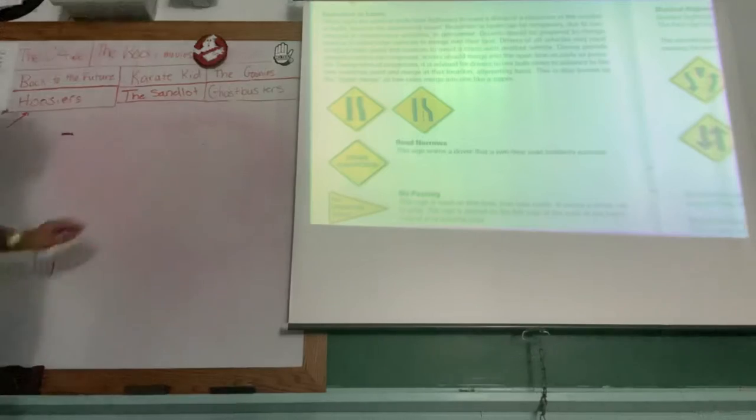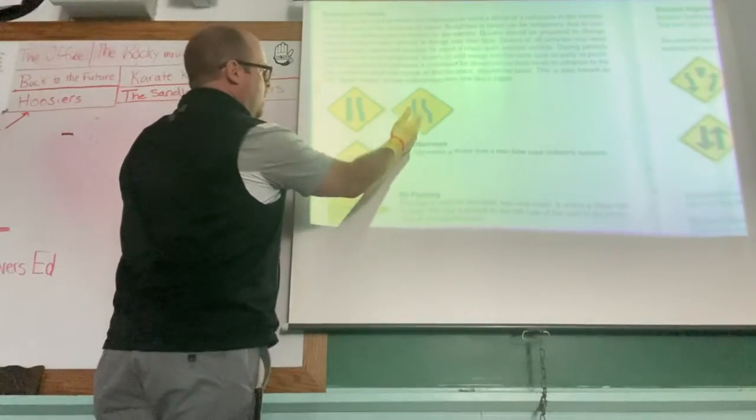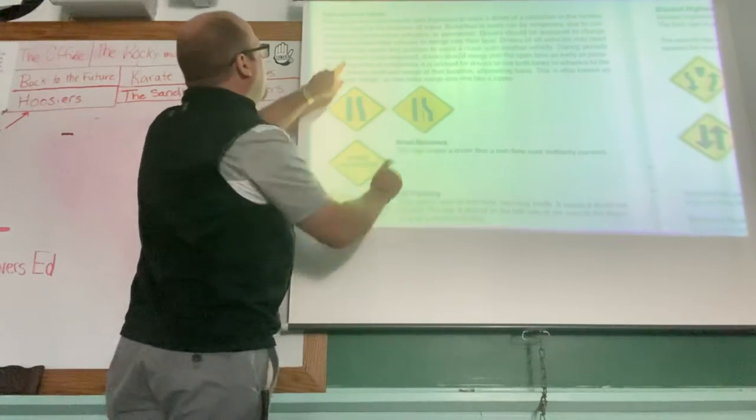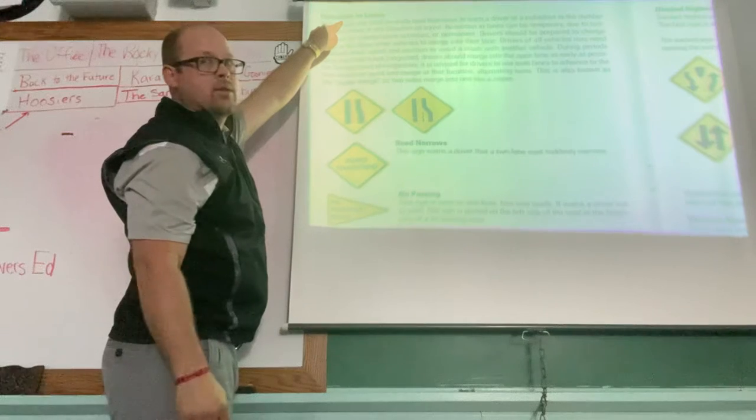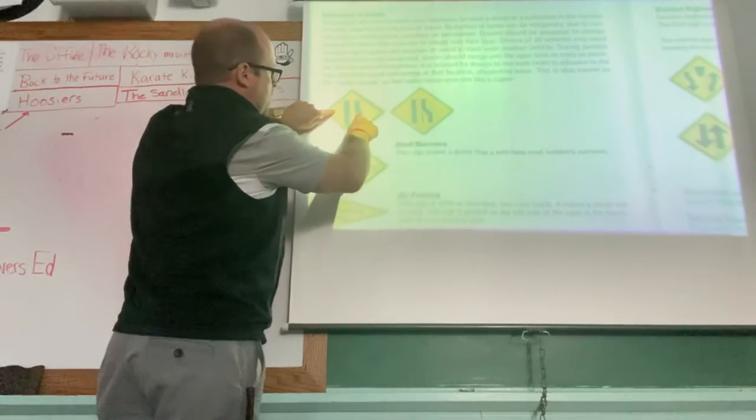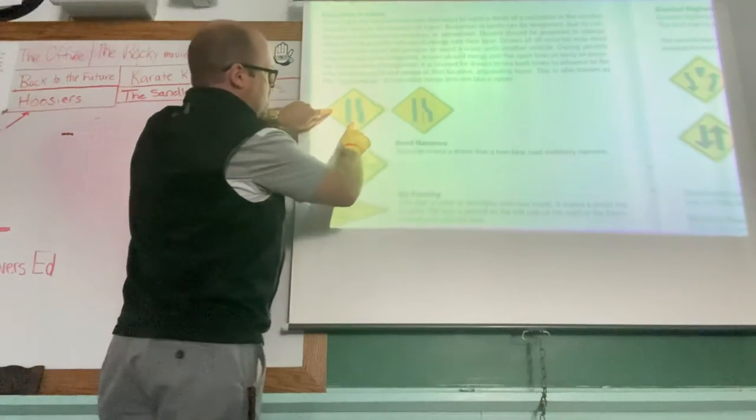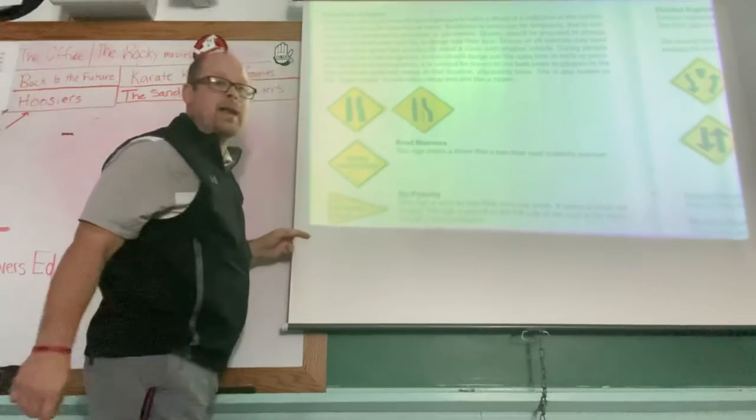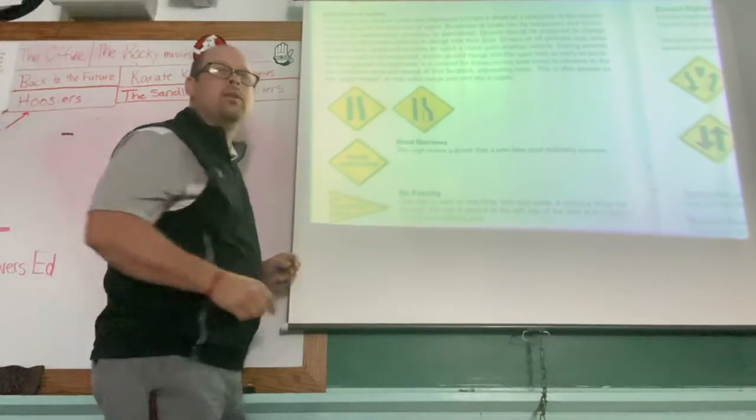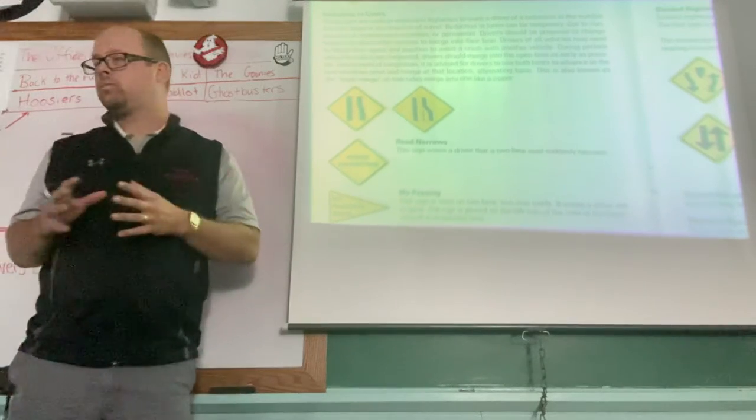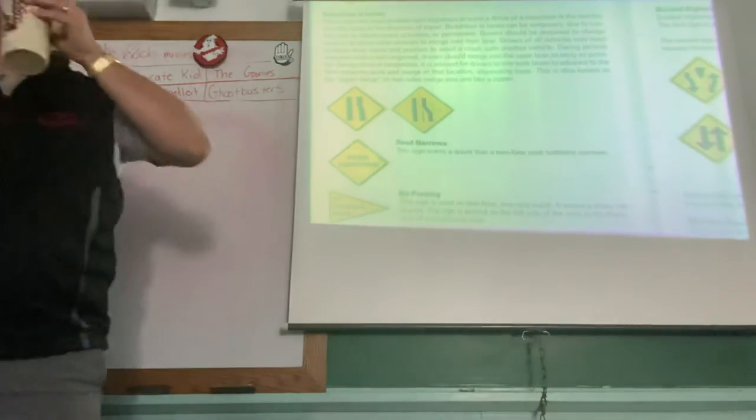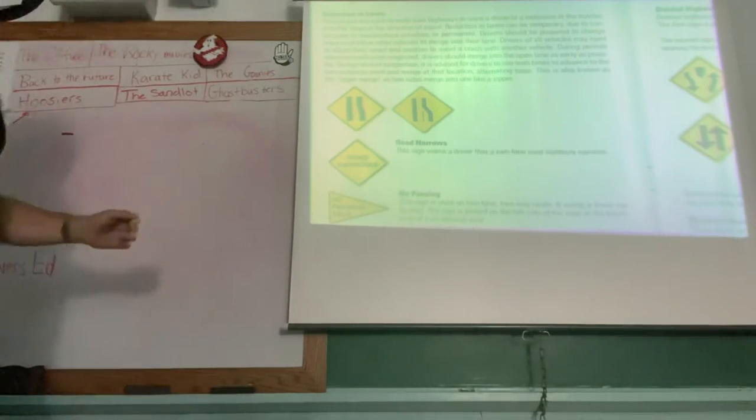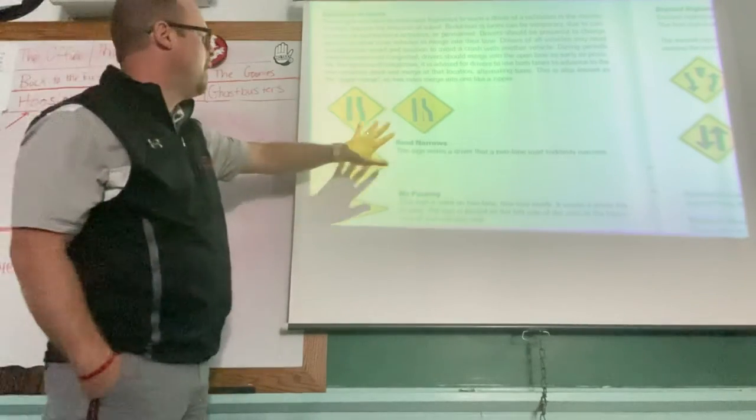Lots of people get this confused because these signs are right by the word road narrows. These signs are not road narrows. It looks like it could be, but it's reduction in lanes. These two signs, it's got the bend and sometimes it has the dash line, sometimes it does not, are reduction in lanes. They are not road narrows. A road narrows sign says road narrows.